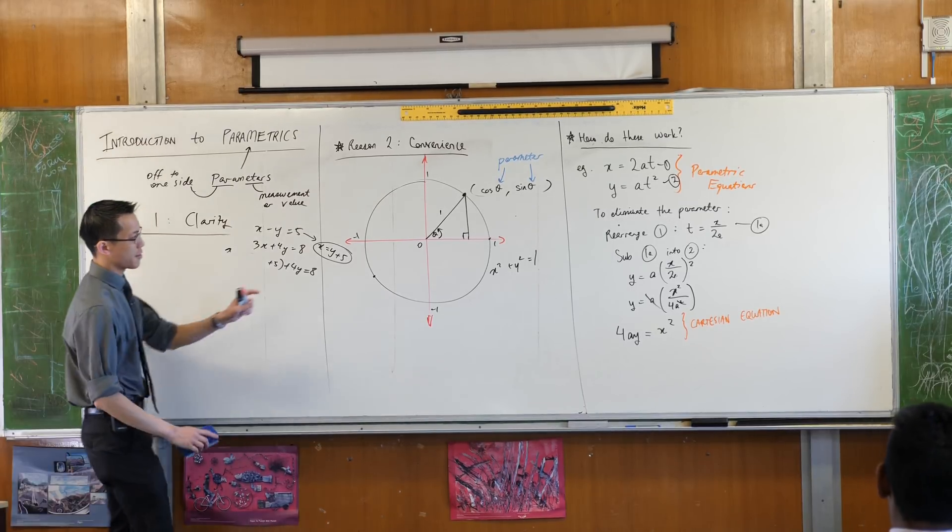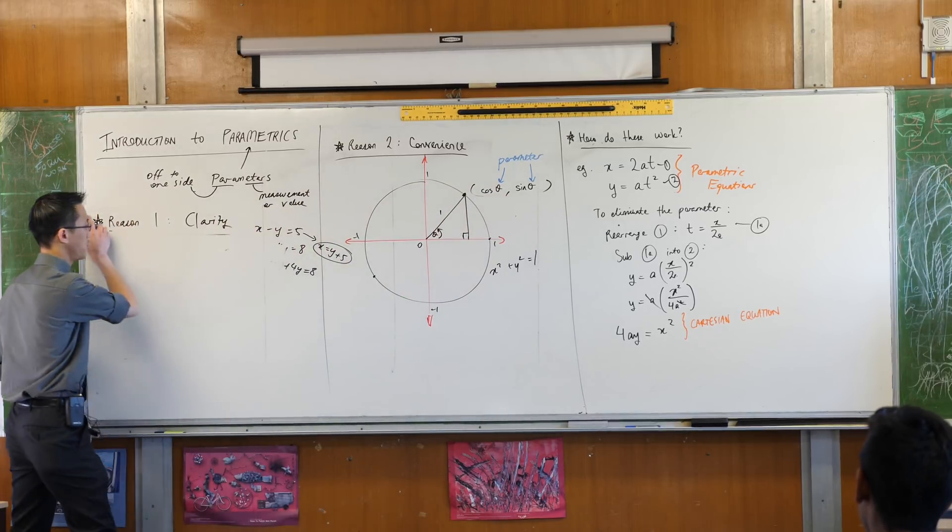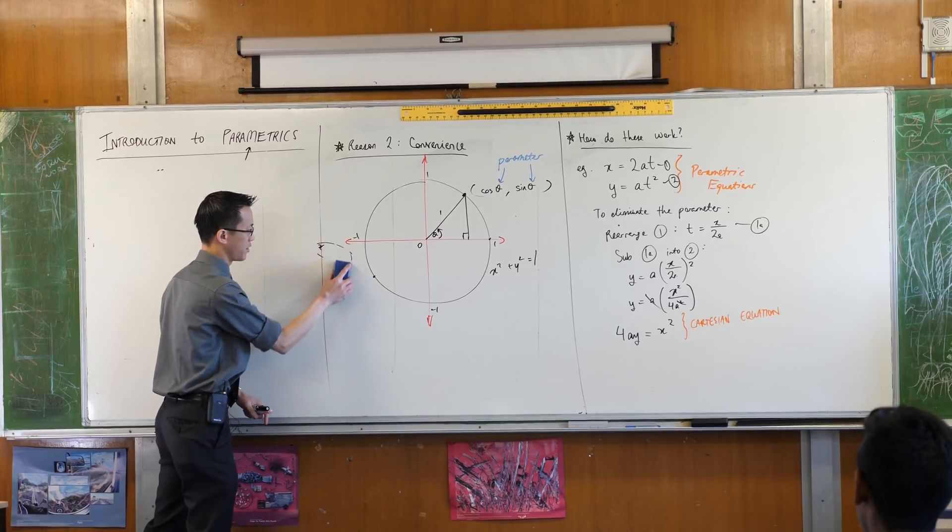How would we get the Cartesian equation from these? Have a think. What would you do? It's a bit of a weirder example.